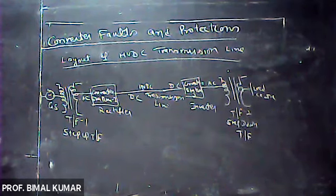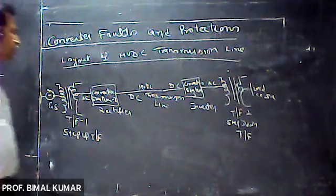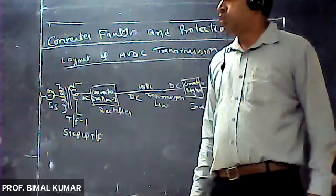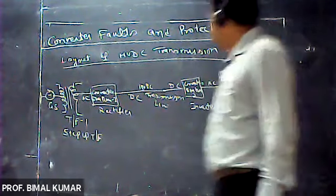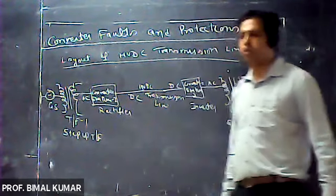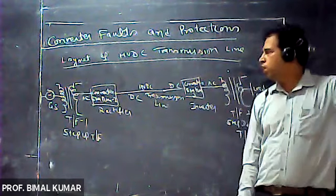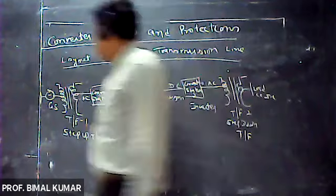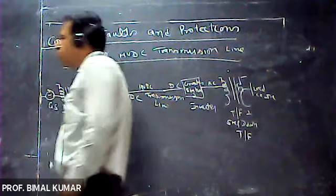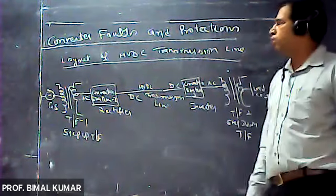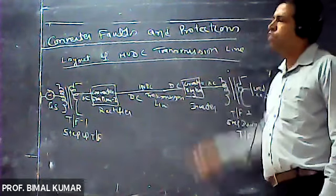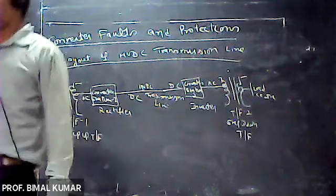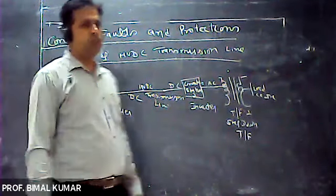The HVDC transmission line differs from AC transmission only in the way of the converter station. In case of AC transmission, there is no need for converter stations, because whatever voltage we get at the generating station - generally 11 kV - it is stepped up and transmitted. Due to major advantages over long distances, we prefer to use HVDC transmission over AC transmission.